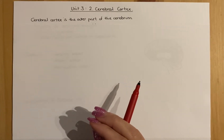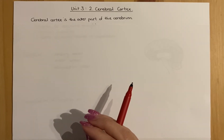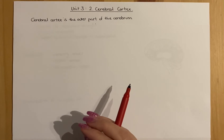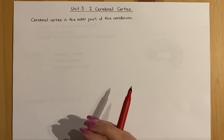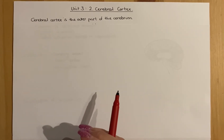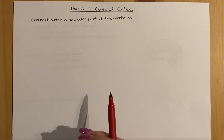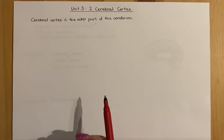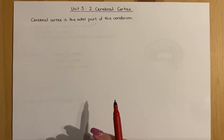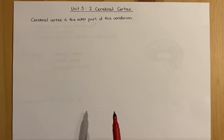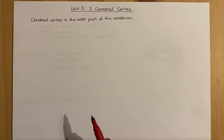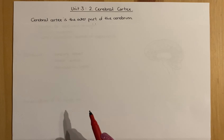This video will cover the second part of unit 3 and the second part of the Neurobiology section. It will cover the cerebral cortex and the corpus callosum, some examples of split brain syndrome, and how questions will ask you about how that works. This also touches on National 5 revision from control and communication.